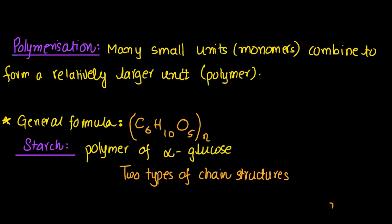Now let's look at the word polymerization. The word 'polymer' refers to a very long chain molecule formed by joining many repeating small units called monomers. Polymerization is simply the process where many small monomer units combine to form a relatively larger unit called a polymer. The general formula for the polysaccharides we are going to study is (C6H10O5)n.